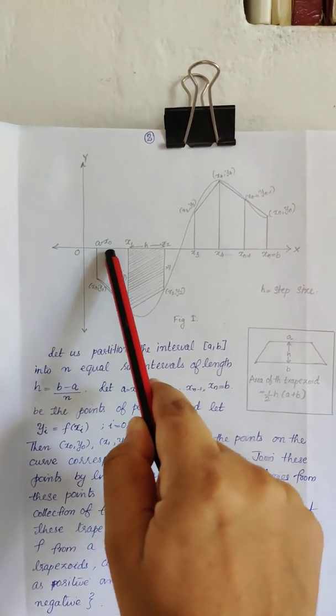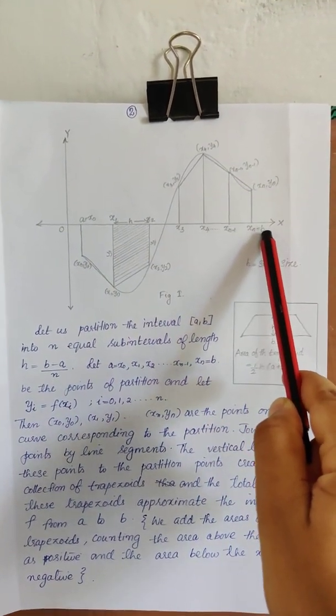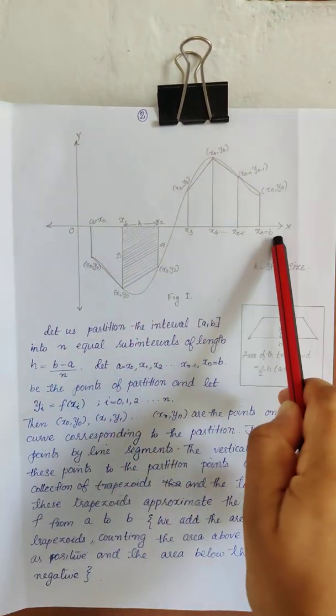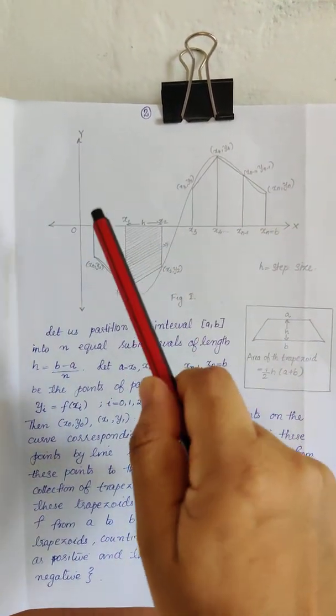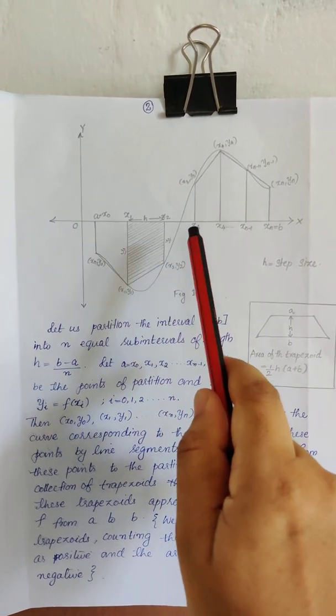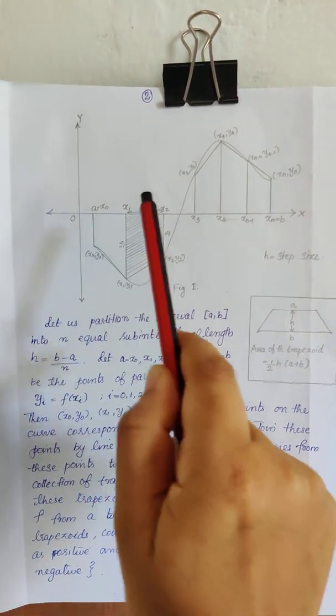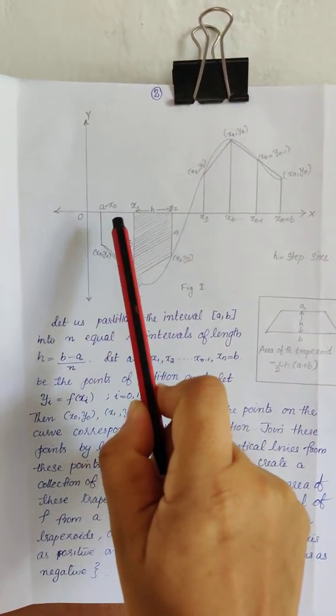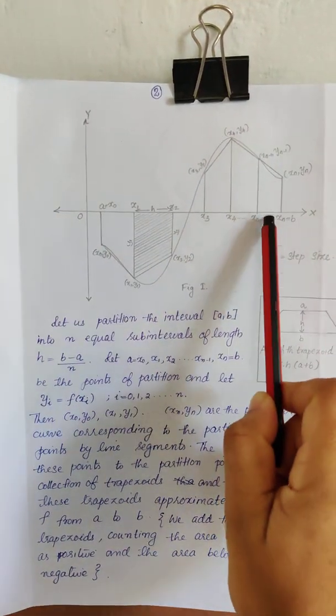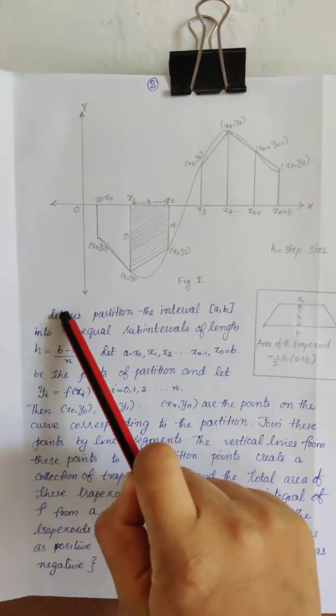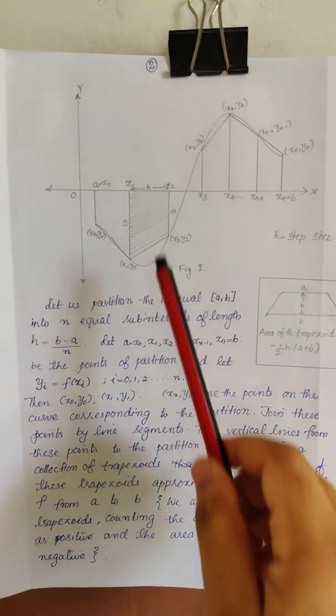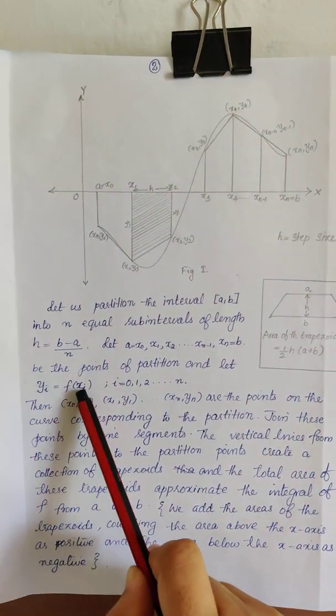We are going to take a partition for a, b of equal length. That is, h is equal to b minus a by n. How many partitions will be there is n and h is the step size. That is, if we are dividing it into 4 equal intervals, the step size will be b minus a divided by 4.